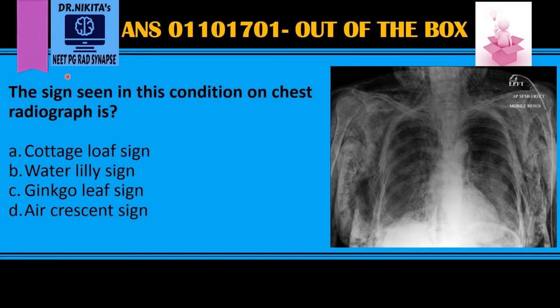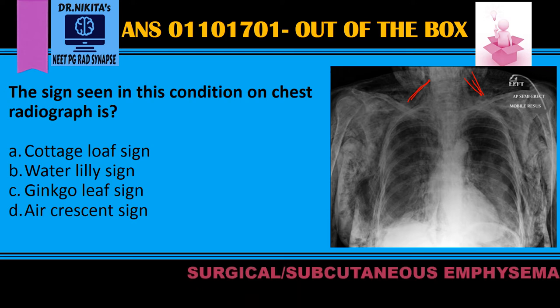We have been asked to identify the sign seen in this chest radiograph. What we see here are these abnormal black lines in the soft tissues. Everywhere in the soft tissues there are these abnormal black lines. We know that black on a chest X-ray means air. So basically there is air in the soft tissues — that is why the diagnosis becomes surgical or subcutaneous emphysema.